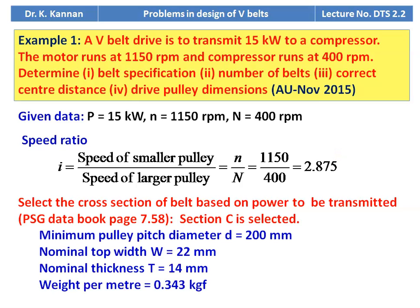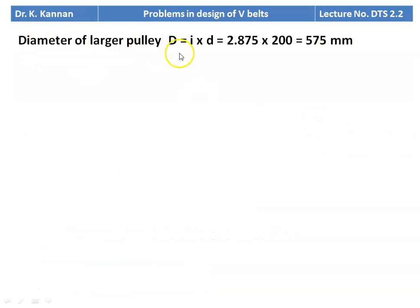Based on the power of 15 kW, you can take either B or C. I take C for the design. The details of section C: minimum pulley pitch diameter D = 200 mm, nominal top width W = 22 mm, nominal thickness T = 14 mm, weight per meter length = 0.343 kgf. Diameter of the larger pulley D = i × d = 2.875 × 200 = 575 mm.